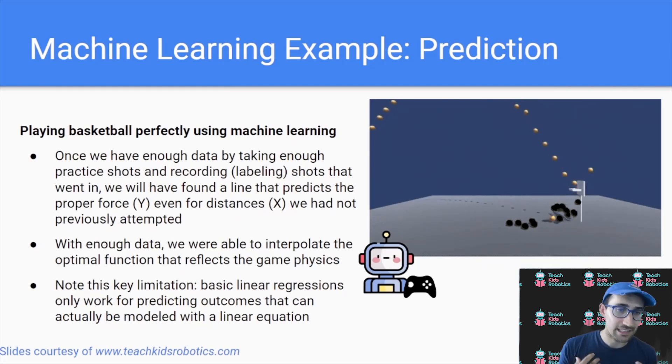And I do note again that key limitation that this linear regression and prediction really only works if the data we are predicting is actually being able to be modeled with a linear system. A single line gives us the perfect solution. So as long as we have data, we can find this line and we can have a perfect prediction.